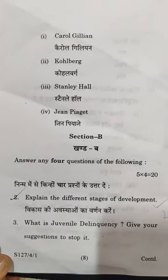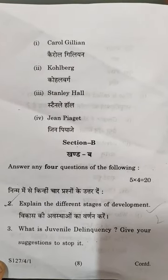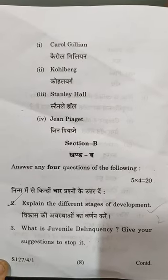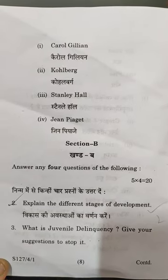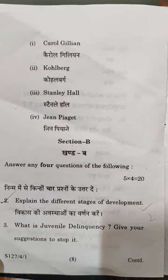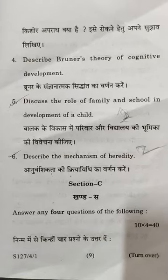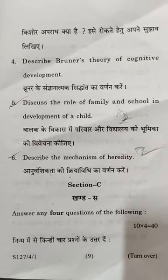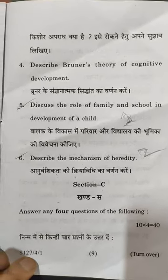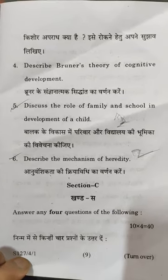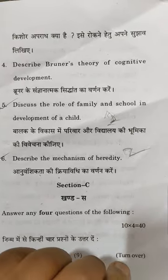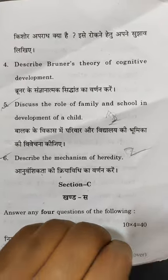Next section is Section B, short answer type questions. You have to attempt four questions, and for those four questions you will get five marks each. Next is Section C, you have to attend four questions and those four questions will be of ten marks each.